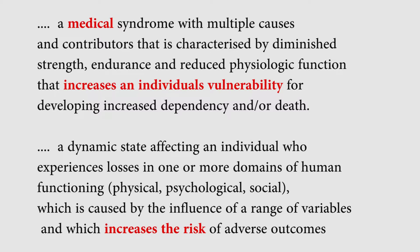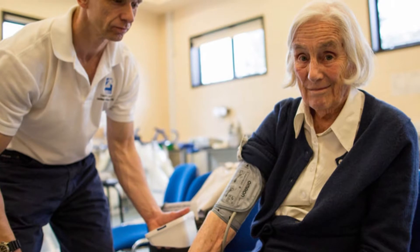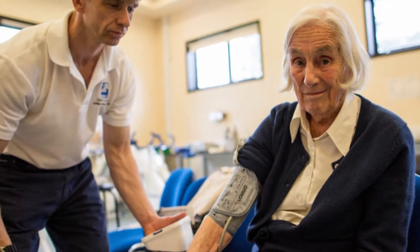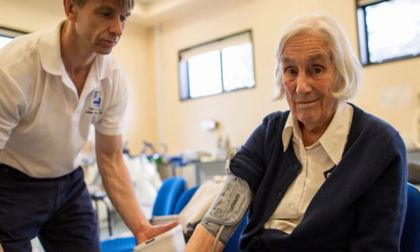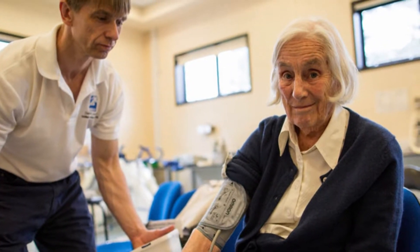Later on, we will look a bit more into frailty compared with disability, but for now, a similar example is when your GP measures your blood pressure. If your blood pressure is deemed too high, your GP could take action and prescribe medication. This is not because a high blood pressure is the problem, but what it does is make you more vulnerable to having a serious event, such as a cardiac arrest or a stroke.